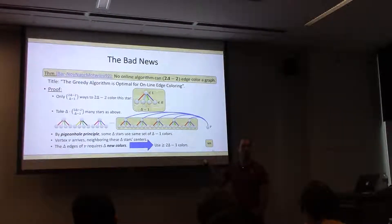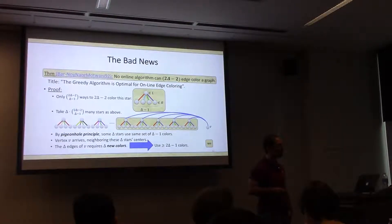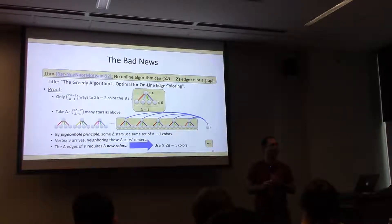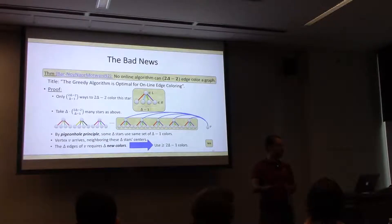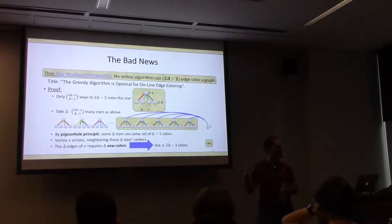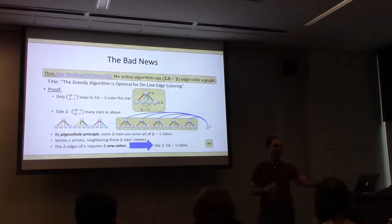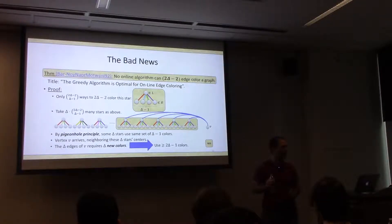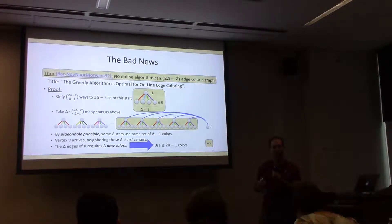This is adversarial in the sense that the edges created at the end depend on the algorithm's choices — but this is a lower bound for deterministic algorithms. You can make something similar work for randomized algorithms. That's not really my issue with this. My issue is not that it's only against deterministic algorithms.